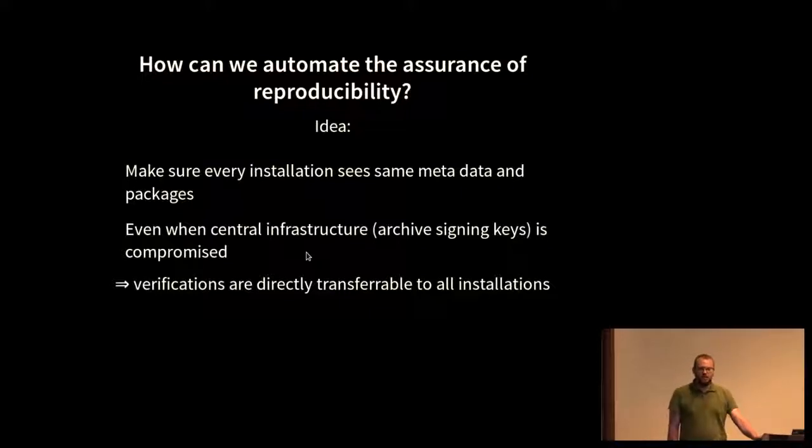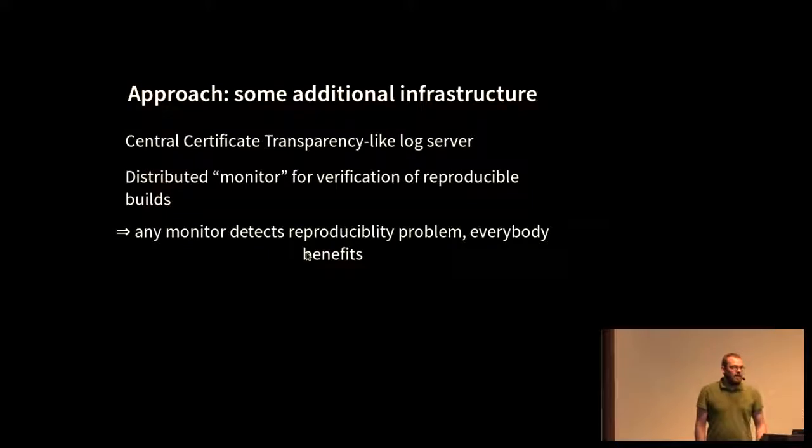Now, in order to do this, we need some additional infrastructure. So we would add a log server, like in certificate transparency, approximately. There needs to be an augmentation of the apt client with some verification parts. And we also have a verification component that verifies that the log server and the archive behave appropriately, so to say. And in particular, they can verify the property of reproducible builds on the archive. And now we're in the nice situation that any monitor, and anybody can run such a monitor, any monitor can detect a violation of the reproducible builds property.